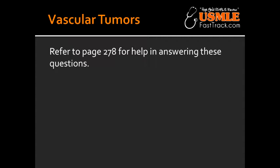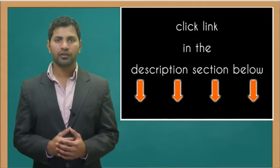What is Kaposi's sarcoma? Kaposi's sarcoma is an endothelial malignancy most commonly occurring in the skin, but can also occur at the mouth, GI tract, and respiratory tract. It is associated with human herpesvirus 8 and HIV, and is frequently mistaken for bacillary angiomatosis.